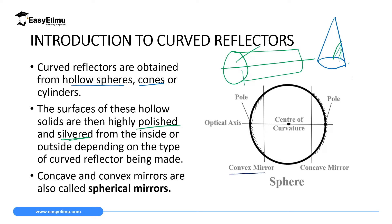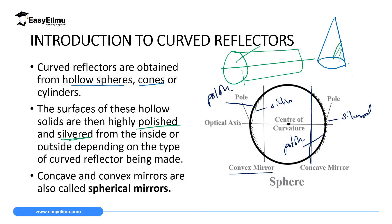For example, if you need a convex reflector, you are going to silver the inner part, then polish the outer part. In that case, the outer part which is highly polished will be a convex mirror. If you need a concave mirror, then you are going to cut a piece of this hollow sphere, silver the outside part, and then polish the inner part, and in this case you will obtain a concave mirror.